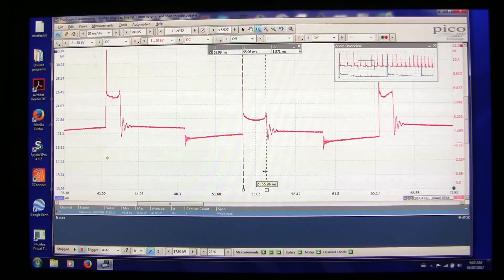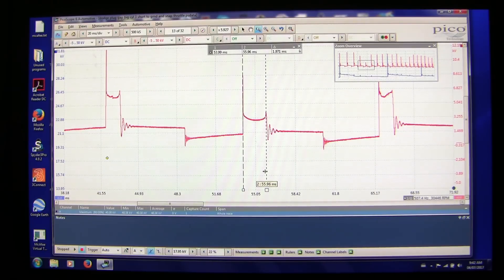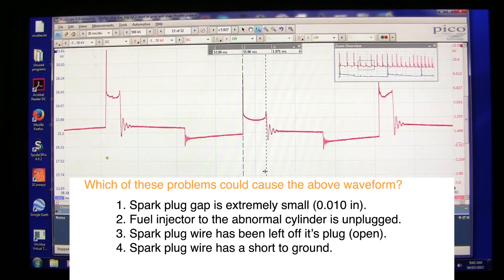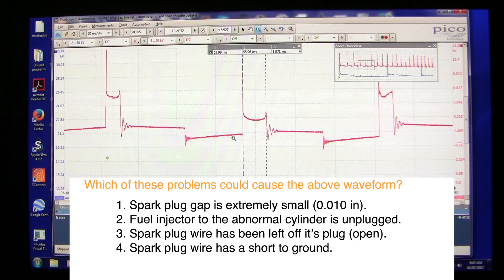1.97, so still in the normal range, but the others are about 1.2. So long burn time, short firing voltage, and a short spark voltage. What's the diagnosis?